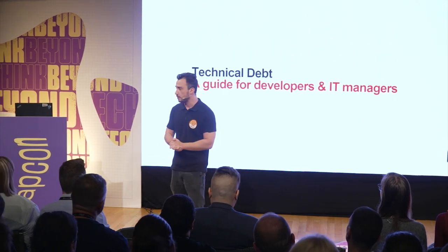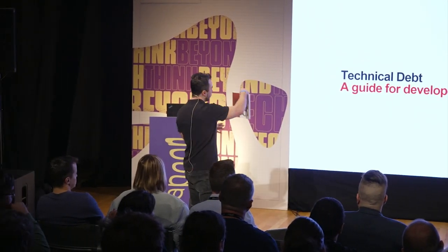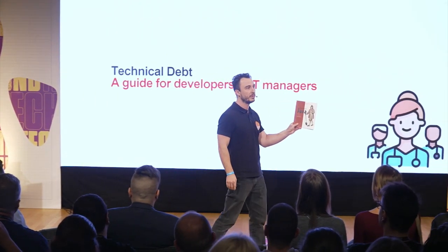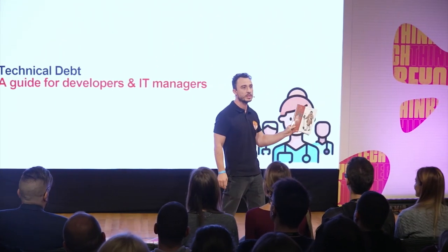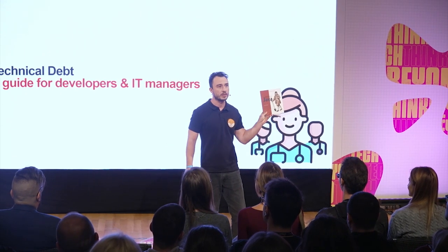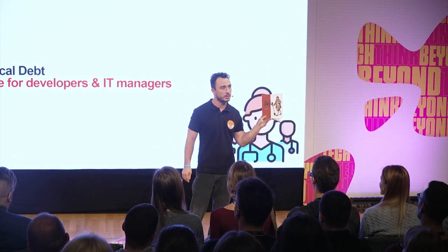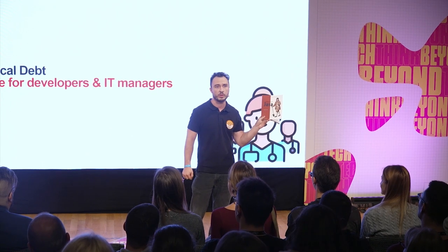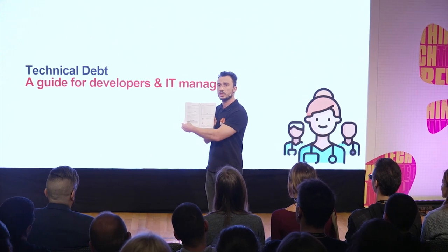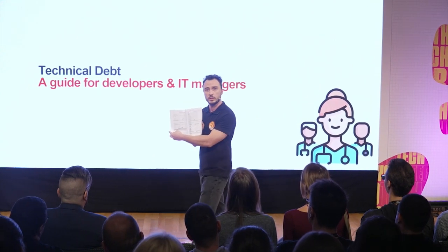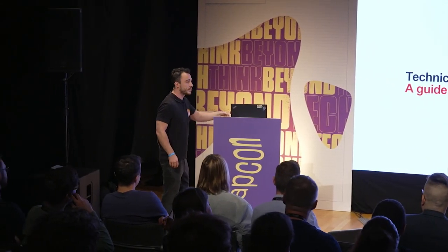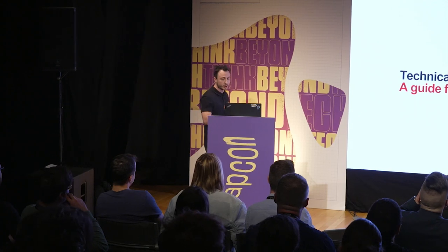Thanks to technical debt, I actually wrote this book — it's my third book, 'Troubleshooting Java.' If there were no technical debt, I wouldn't have had the opportunity to use all the techniques I put in this book. This is a paper copy you might win — just go to the Endava booth. And if you're not interested in the content, it's black and white with lots of figures, so you can use it as a coloring book.